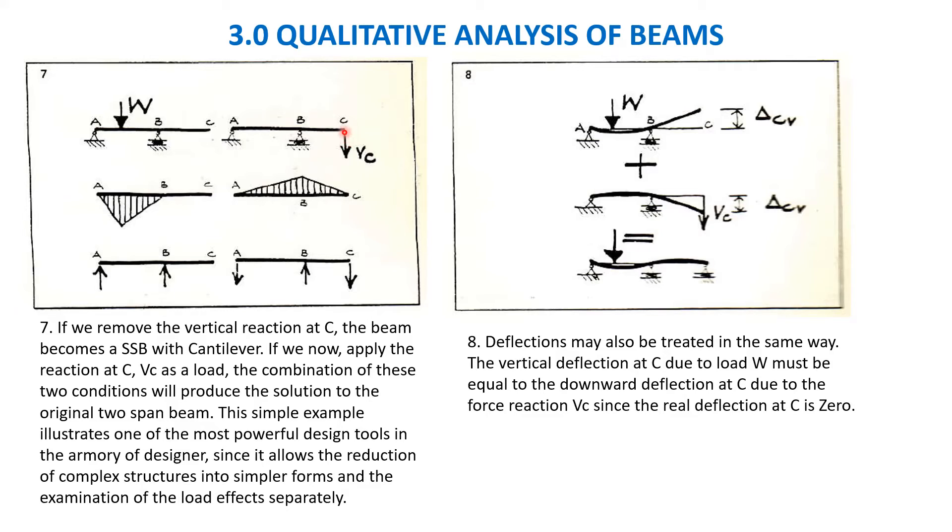It will come down, so it will maintain this slope. It will go like this and like this. There is a moment at B, a hogging moment. Here you can see the reaction VA, VB is upwards, but because of this VC, suppose if this is not there it will go like this.